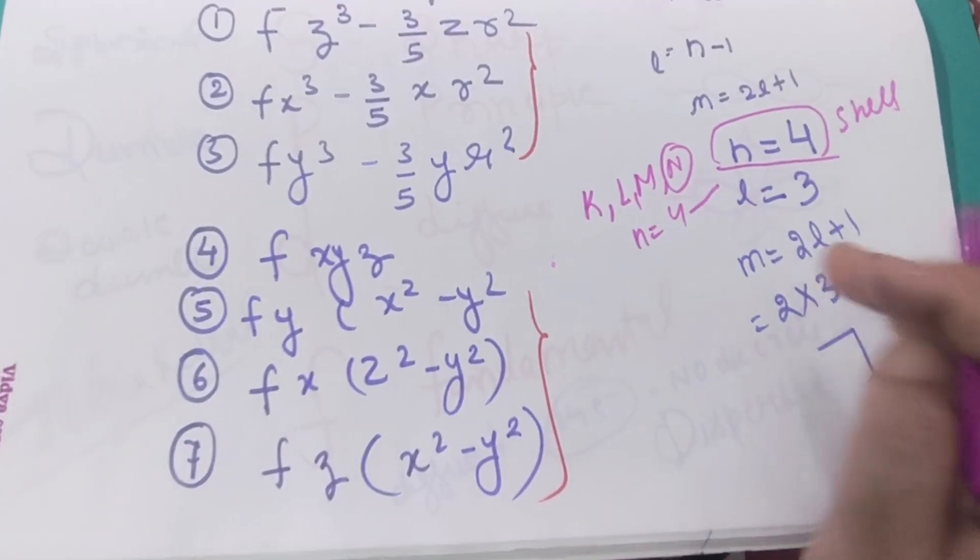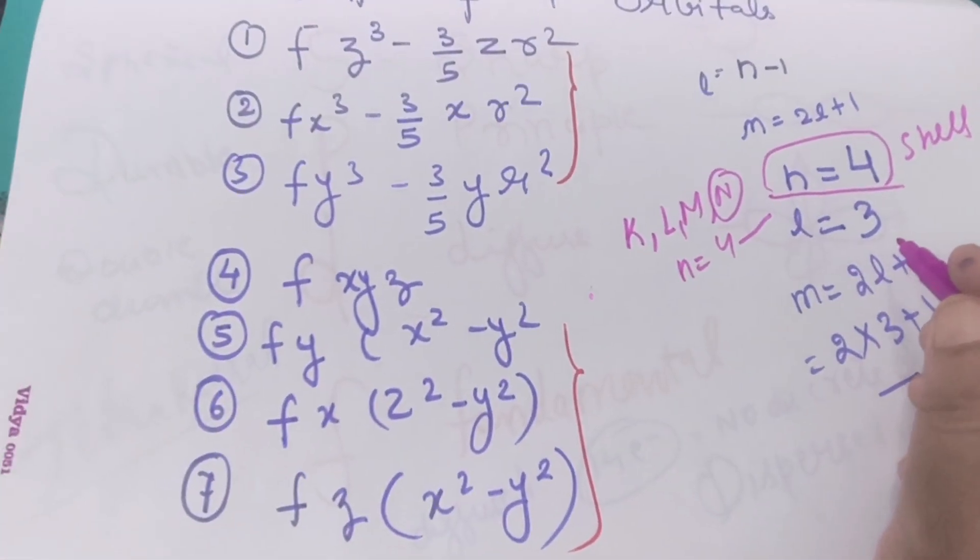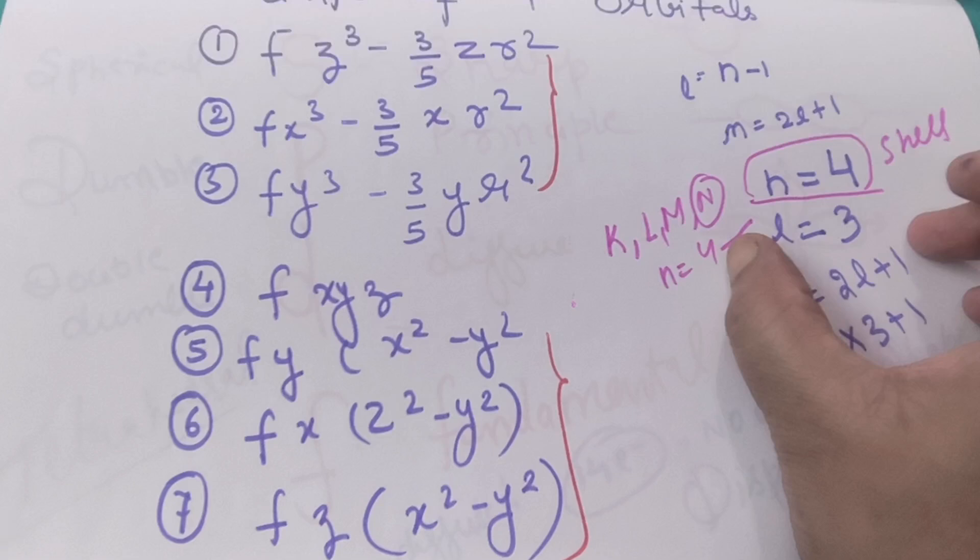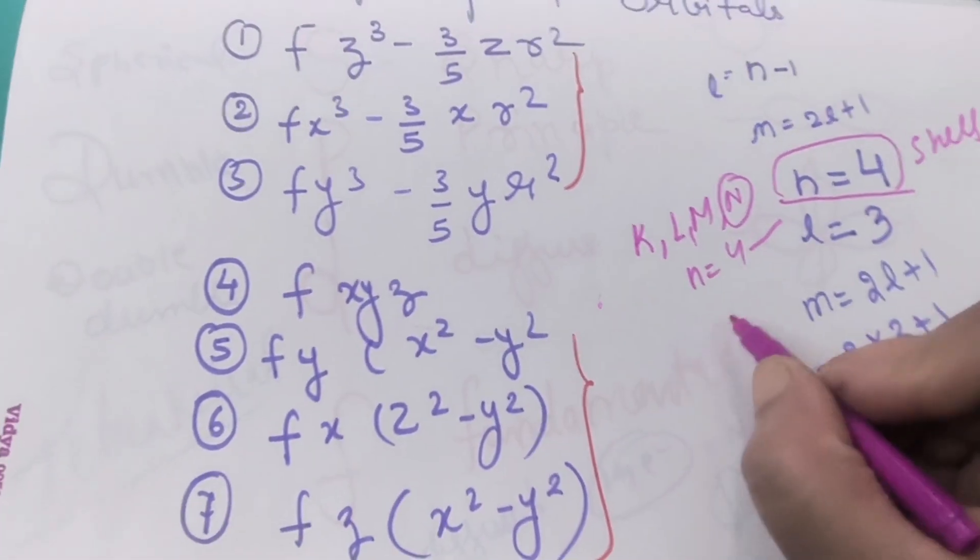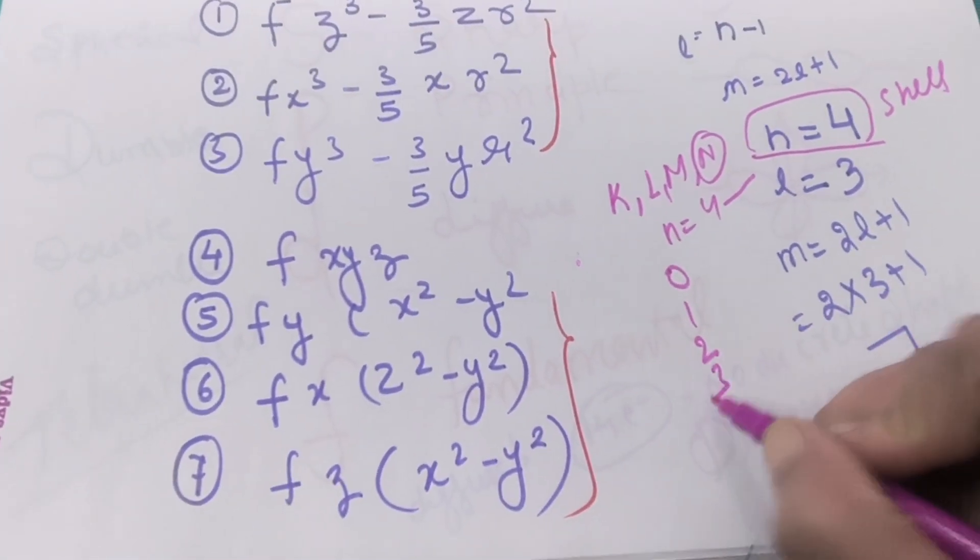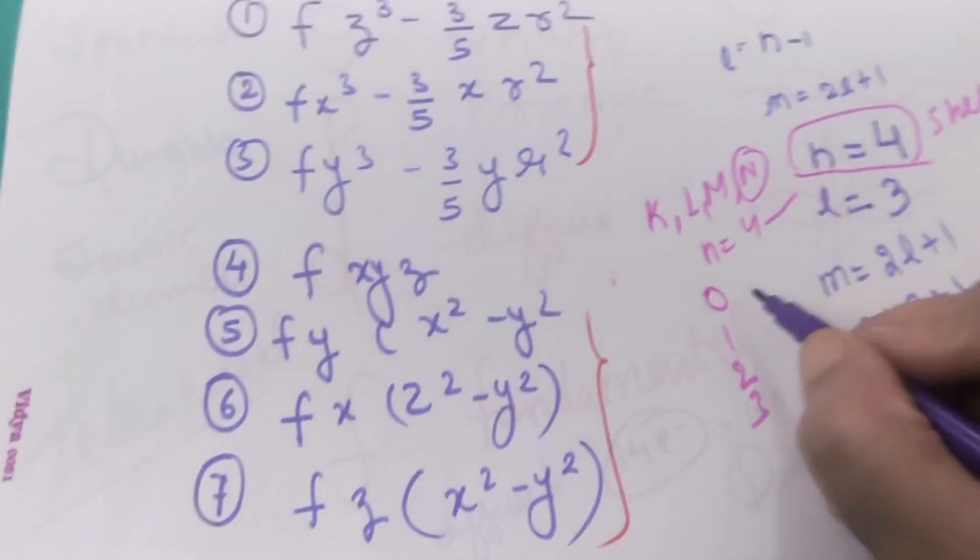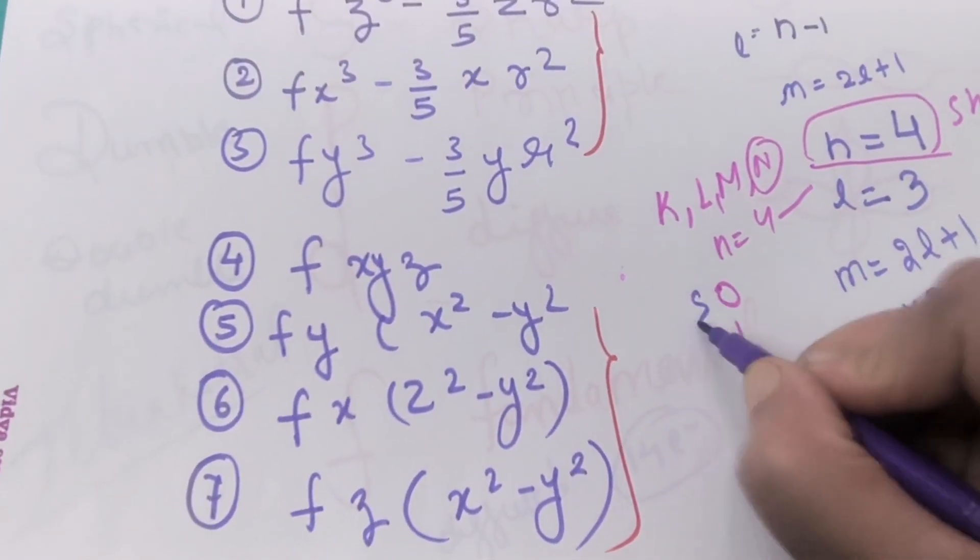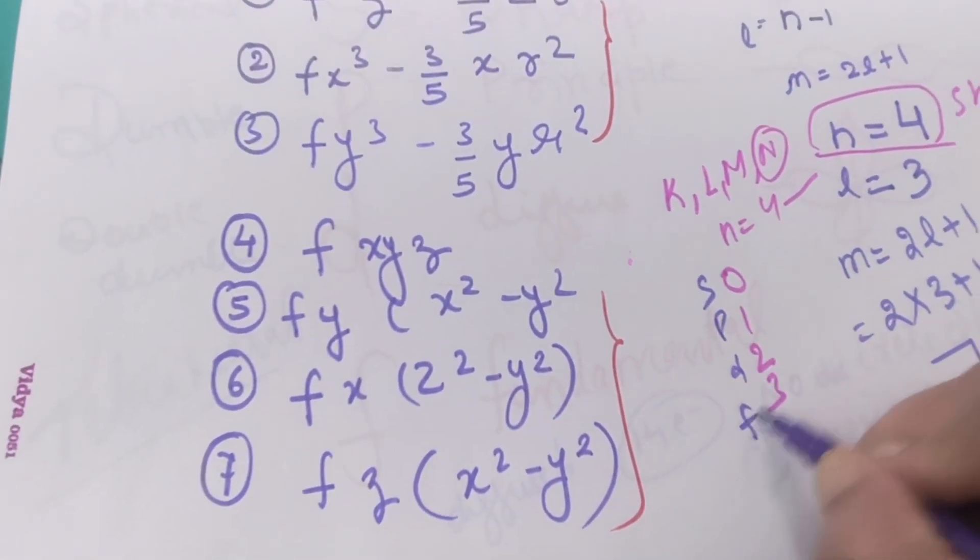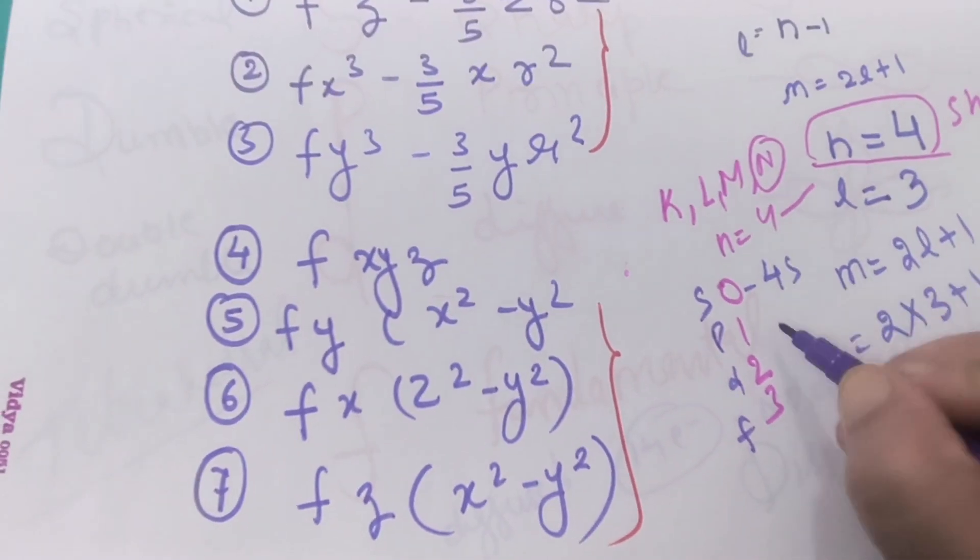It means that the f orbitals are present in the fourth shell. When we are talking about shells K, L, M, N, the fourth shell is n equals to 4, then l equals to 3. It means that there are three sub, there will be four sub shells.